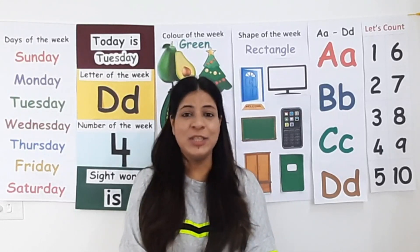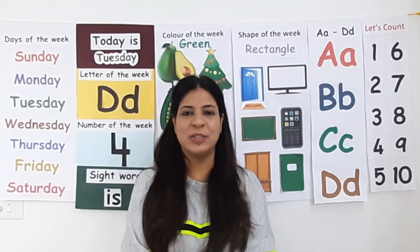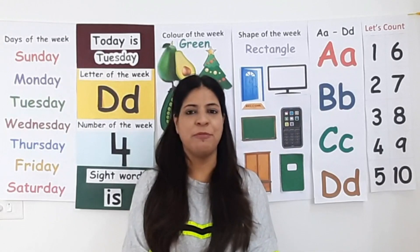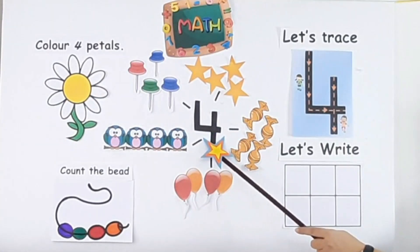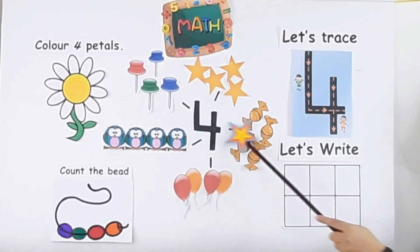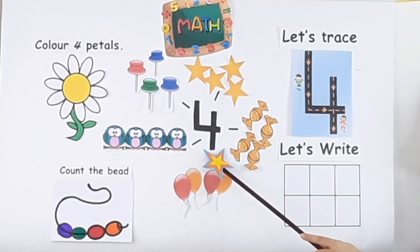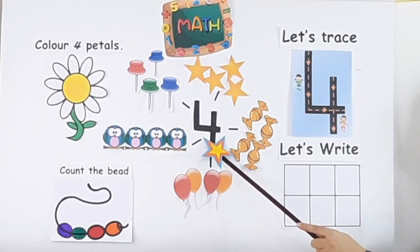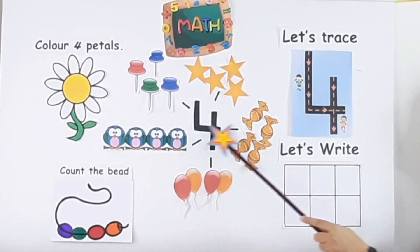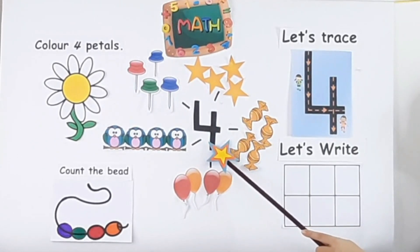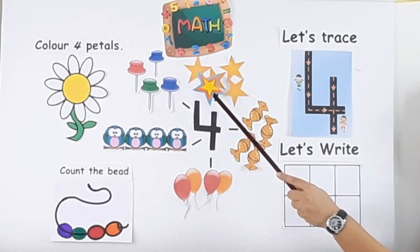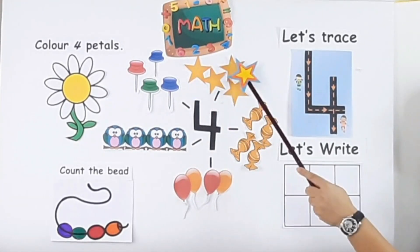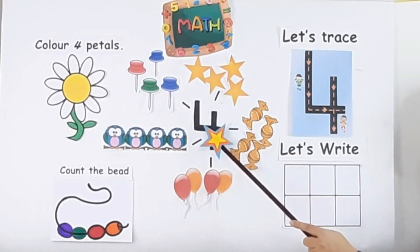So children, today is Tuesday and on Tuesdays we learn about a new number. Today we are going to learn all about number four. This is number four — down and over, down once more. This is the way we make number four. Now let's count the stars: 1, 2, 3, 4. How many stars? Four stars.